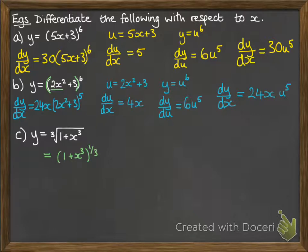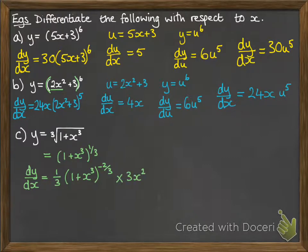So if we differentiate the outside of this one, that will be a third times (1 plus x cubed) to the power of minus 2 thirds — bring down the power, that third, and then reduce the power by 1. We've not done anything with the inside yet. So you differentiate the outside, leave the inside alone, then multiply it by the derivative of the inside, which is 3x squared from that x cubed part. Then just tidy it up.